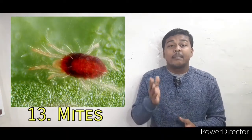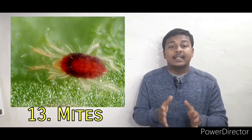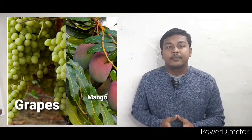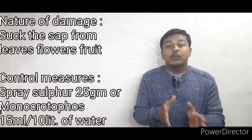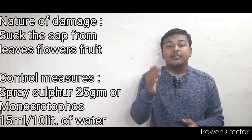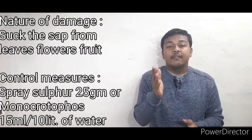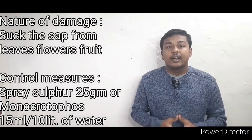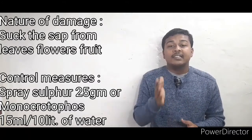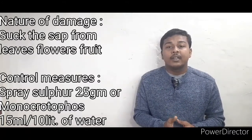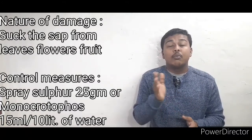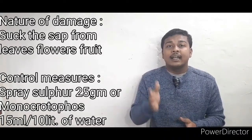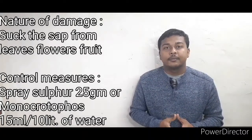The next pest is the mite. The affected crop plants are mango and grapes. They suck the sap from the leaves, flowers, and fruits. To control this, spray sulfur at 25 grams or monocrotophos at 15 ml in 10 liters of water.